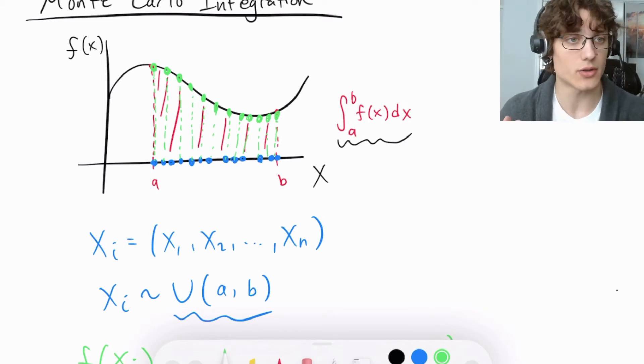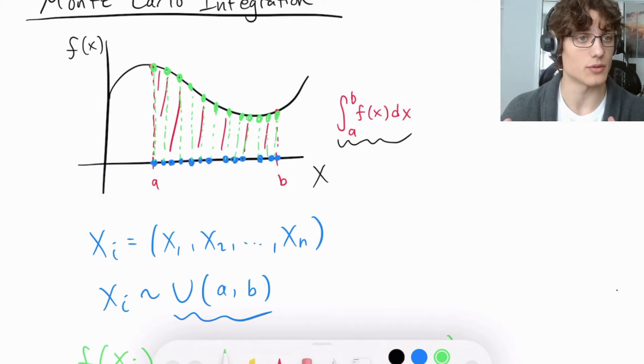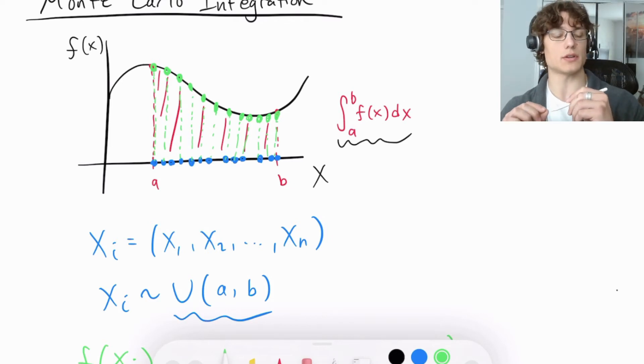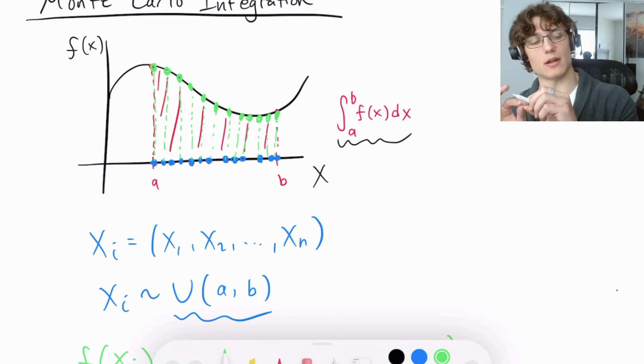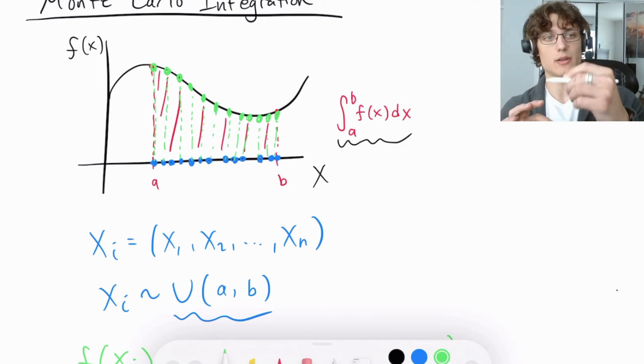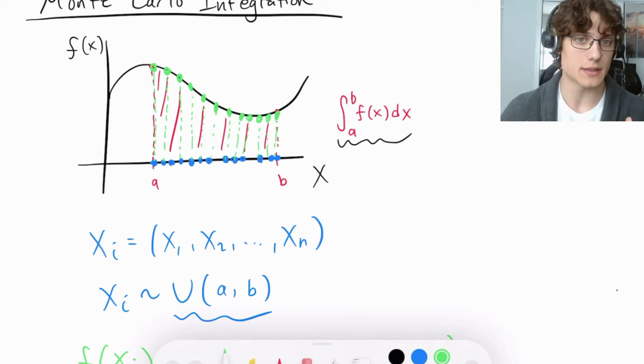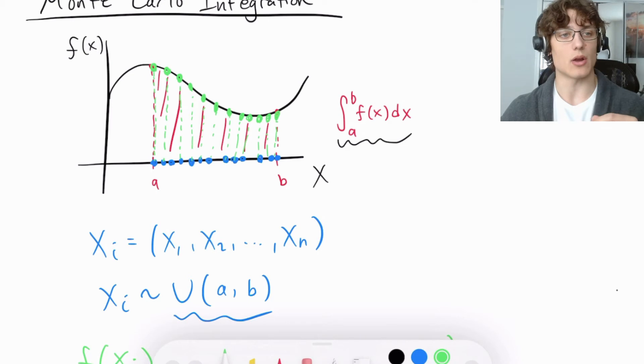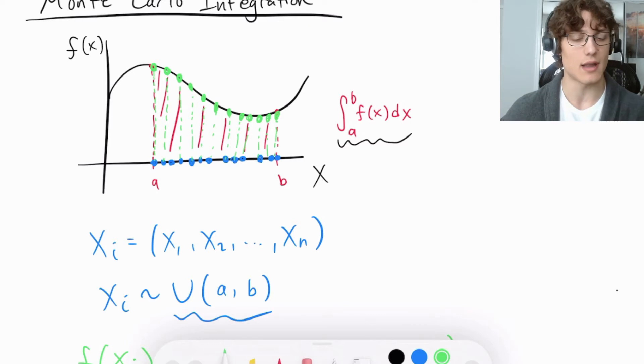If we think about this in terms of our definite integral definition, this is actually quite similar. We're taking the function evaluated at a certain point, and then we're also going to consider another point and a function evaluated at that point. The only difference is we're not developing this notion of a delta x. We are inducing that change randomly through this distribution of randomly selected x's via that uniform distribution from a to b.